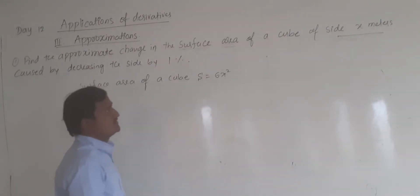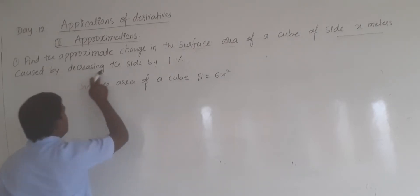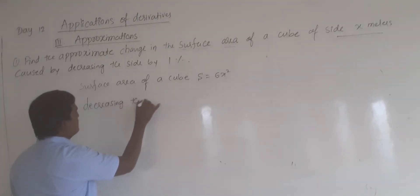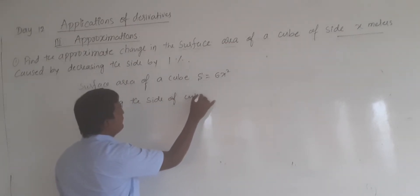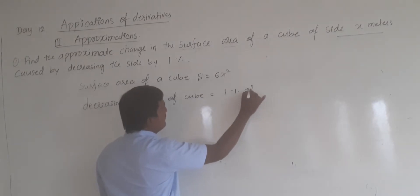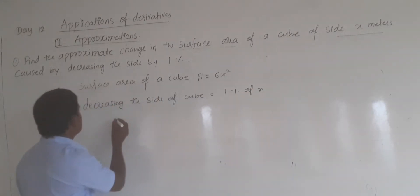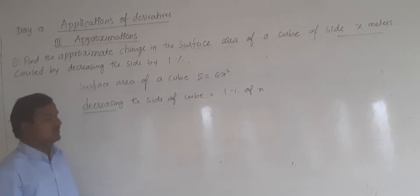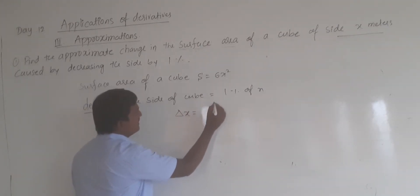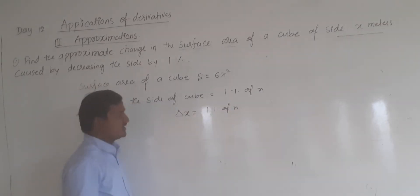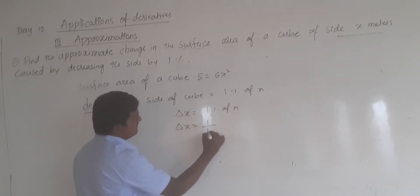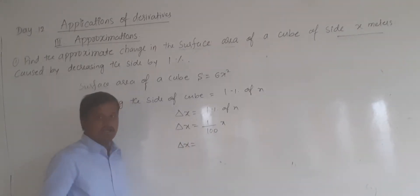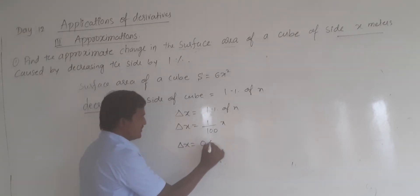There is a side x meter caused by decreasing the side by one percent. So decreasing the side of the cube is equal to one percentage of x. Therefore delta x is equal to 1 percent of x, which means delta x is equal to 1 over 100 into x, that is 0.01 into x.